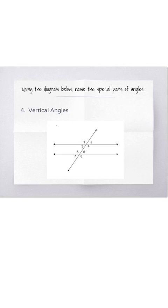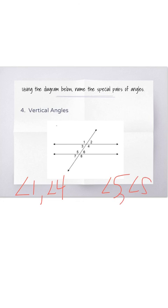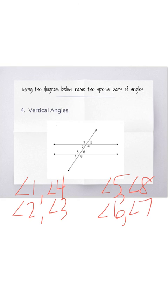Vertical angles: remember that vertical angles only share the vertex — they make V's that point at each other. These could be angles 1 and 4, angles 5 and 8, angles 2 and 3, or angles 6 and 7.